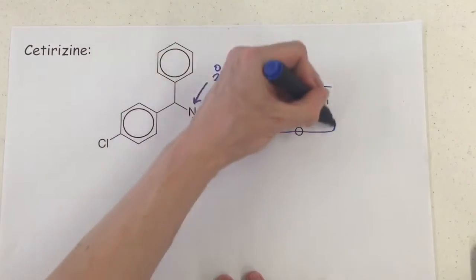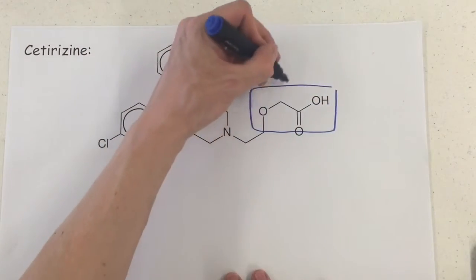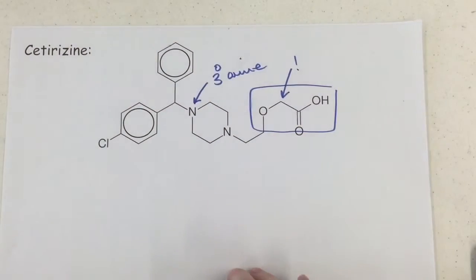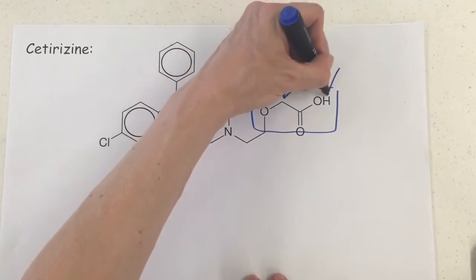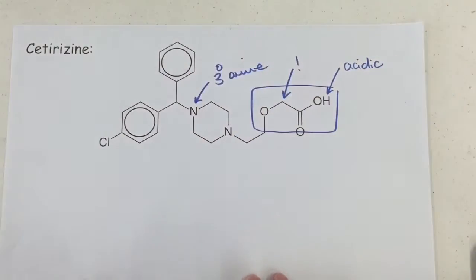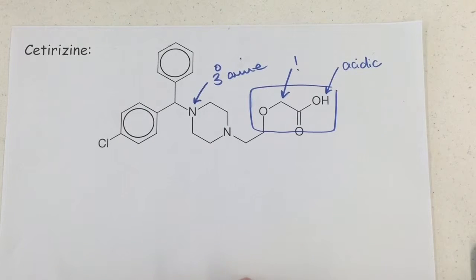You may be looking at this bit and thinking, I can see an ester link, but notice there's a carbon here. There's actually a CH2 group in there, so that's not an ester. What we absolutely do have though is some acidic feature to our molecule because we have a carboxylic acid group over on this end.